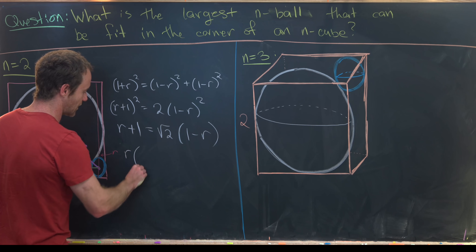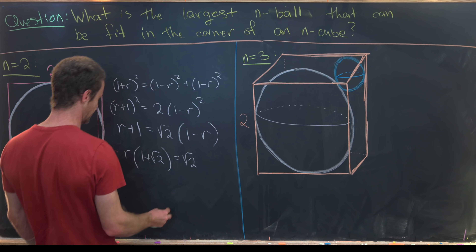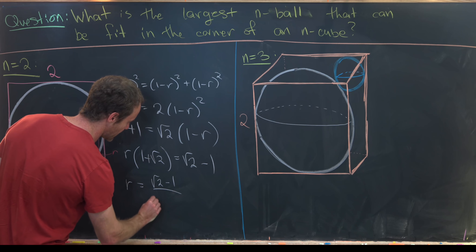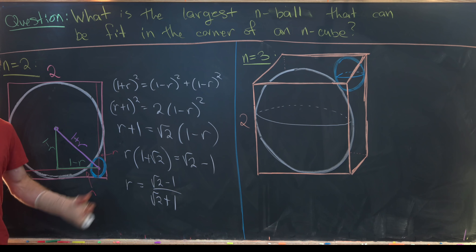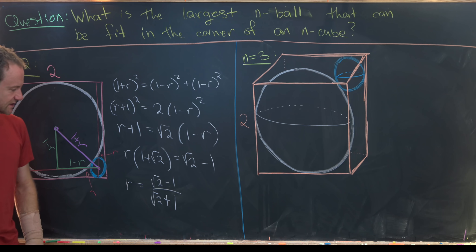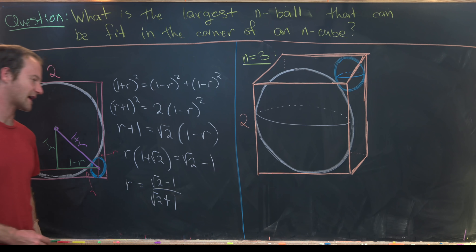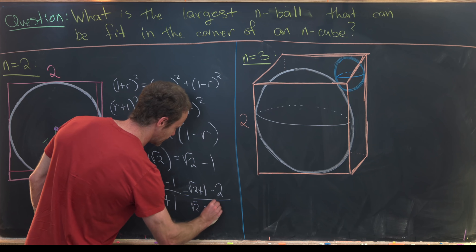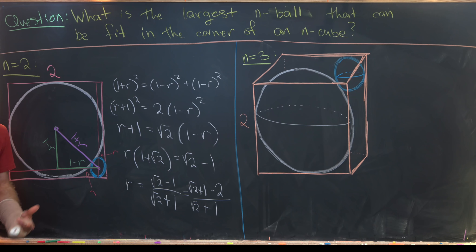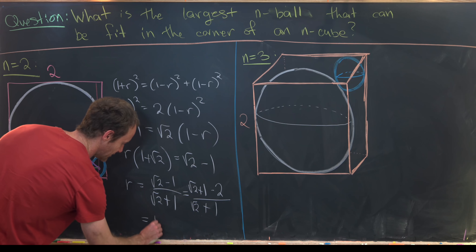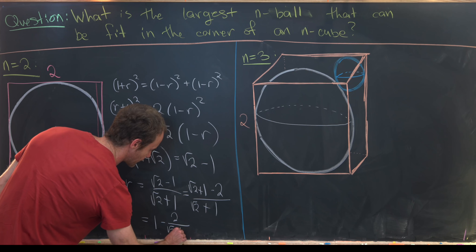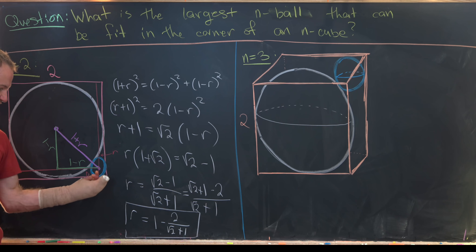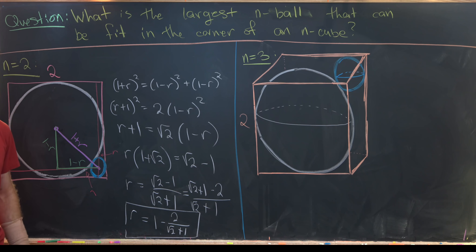Rearranging, r·(1 + √2) = √2 − 1, so r = (√2 − 1)/(√2 + 1). To simplify, I rewrite the numerator as (√2 + 1) − 2, which separates into 1 − 2/(√2 + 1). So the largest circle that fits in this corner has radius r = 1 − 2/(√2 + 1).